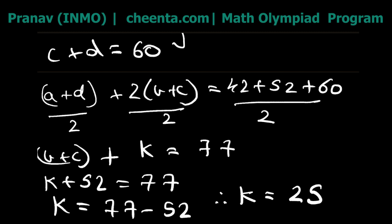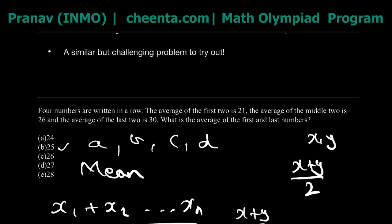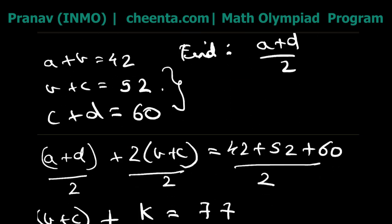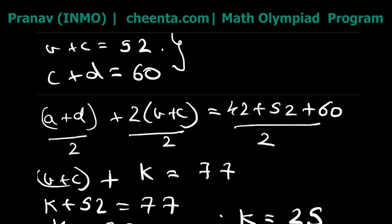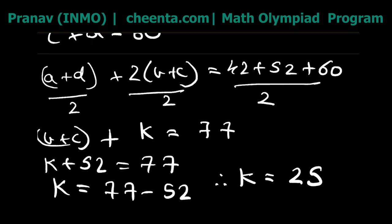The sum of the first and second numbers is 42. They also told us the average of the last two terms is 30, so the sum of the third and fourth terms is 30 × 2 = 60. So the sum of all four terms is 42 + 60 = 102.